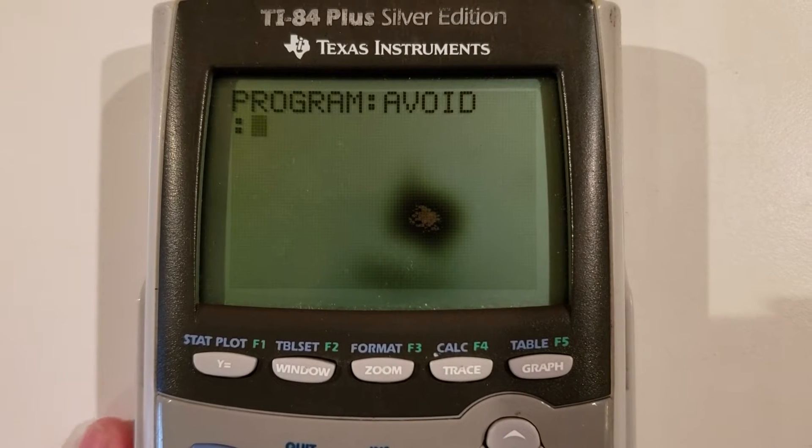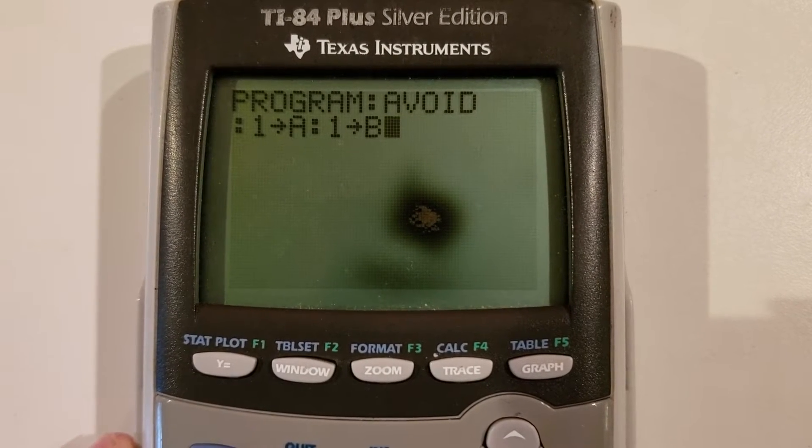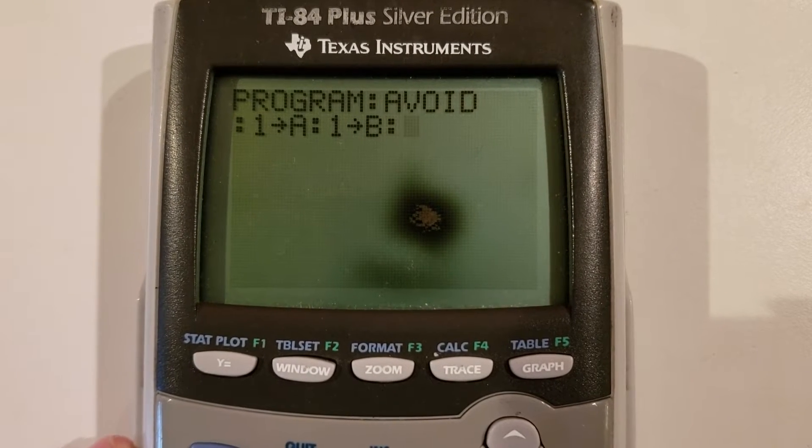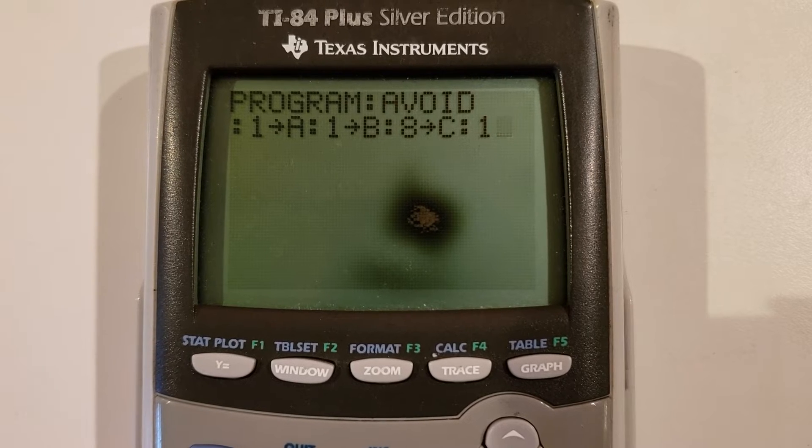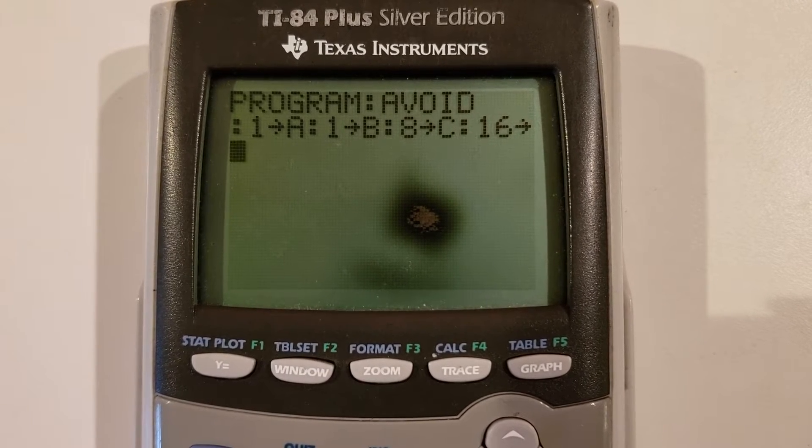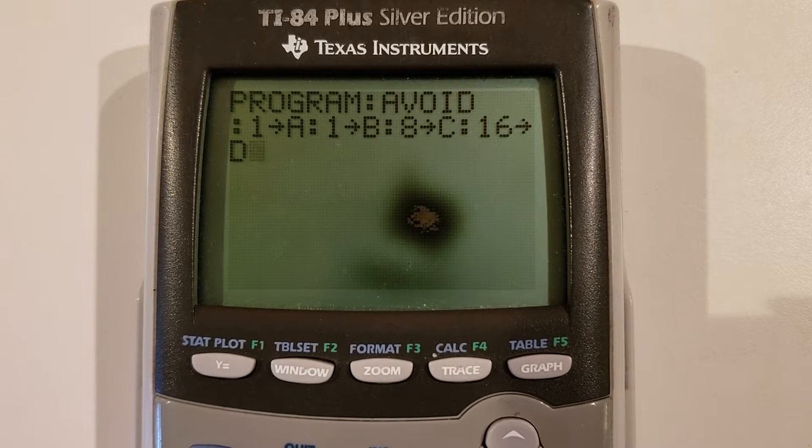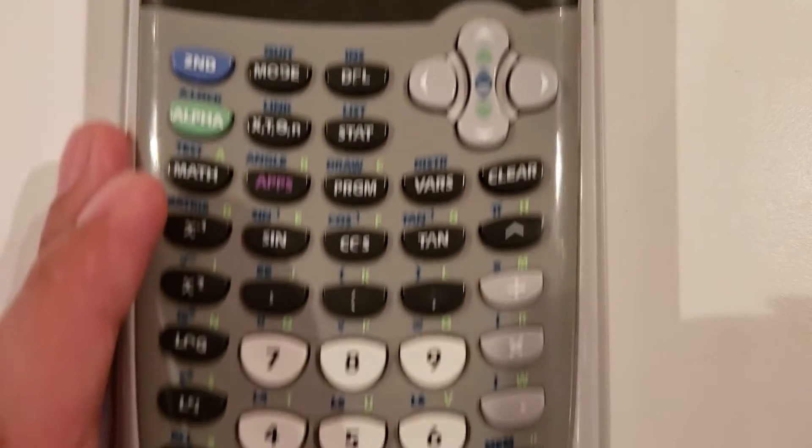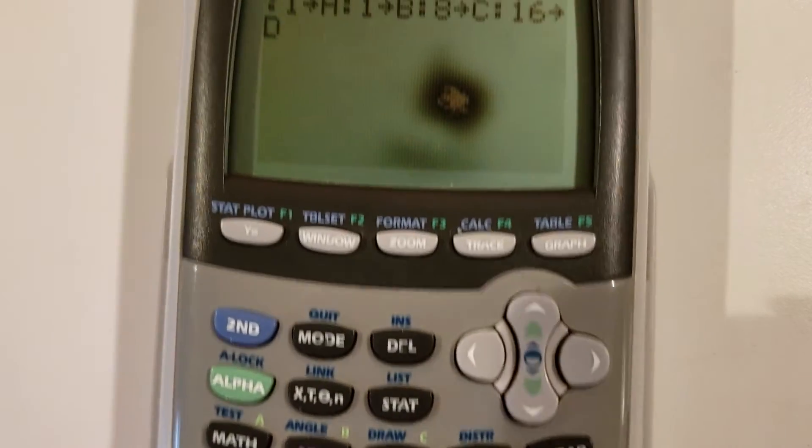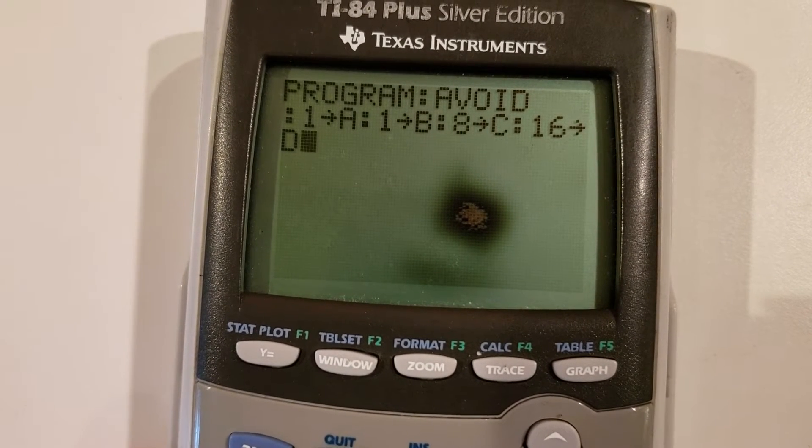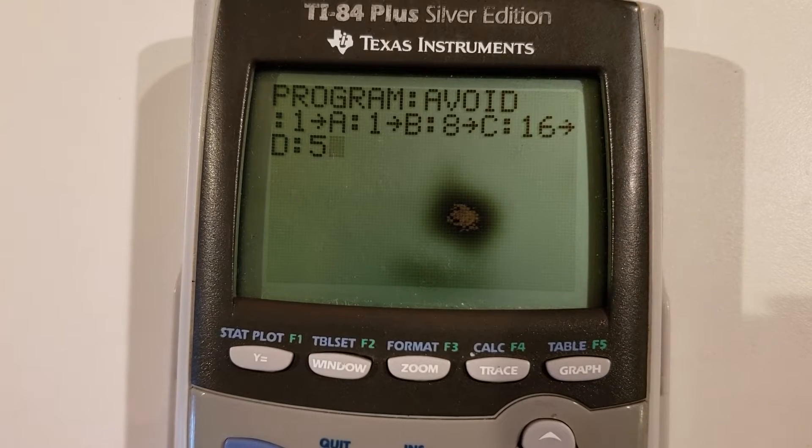The first part of this program is several assignment statements. I am storing the value 1 to the variable A and 1 to the variable B. The calculator actually has 27 built-in variables that store integers and complex numbers, out to a very large number of figures, and up to 10 places of accuracy with decimal points. They are A through Z and additionally the theta key. This program only needs five, we'll say six of them.